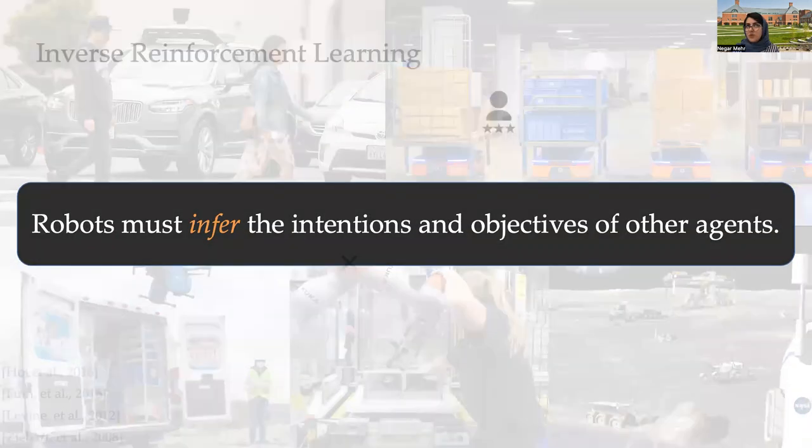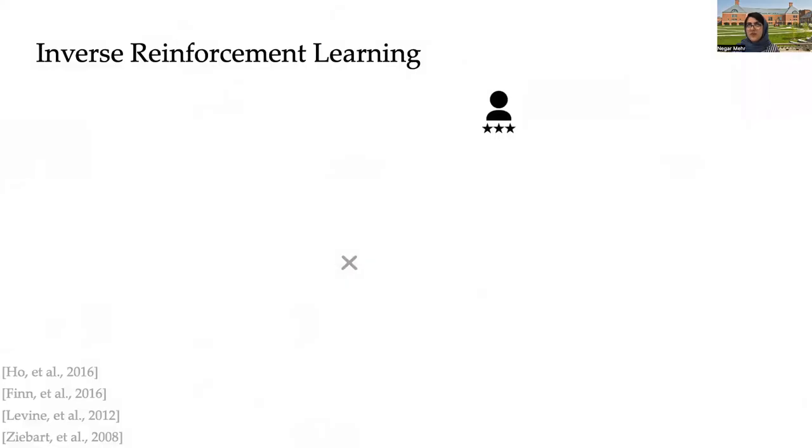The common approach towards objective inference is through the framework of inverse reinforcement learning, where the assumption is that we try to learn from executions of a task by an expert, such as a human, and collect the trajectories of how to accomplish the task.